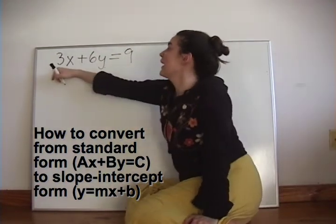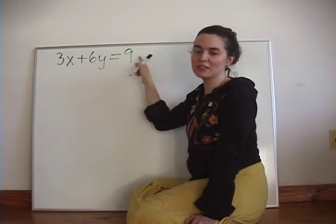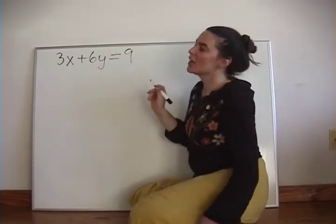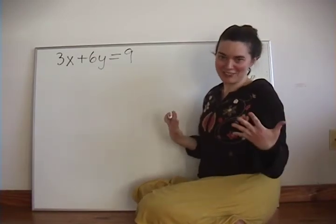We know we're in standard form because it's the pattern Ax plus By equals C, where A, B, and C are all numbers. We want to get it into slope-intercept form, which is y equals mx plus b.